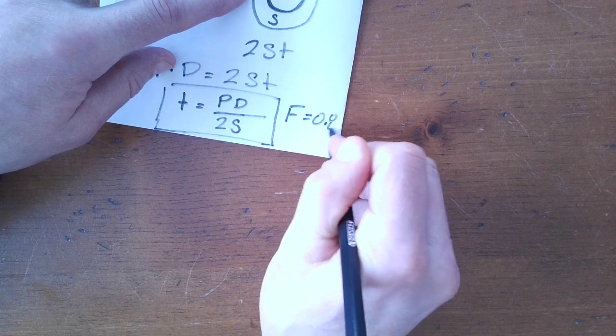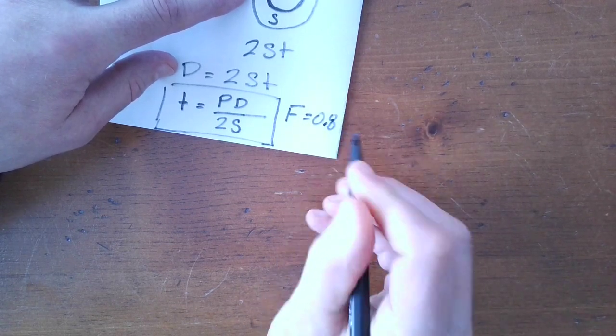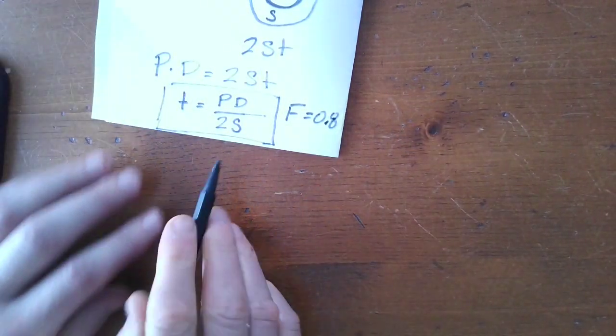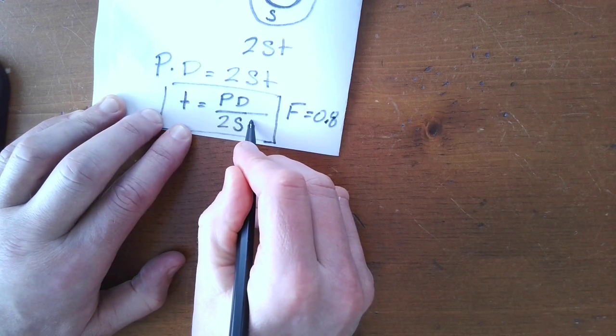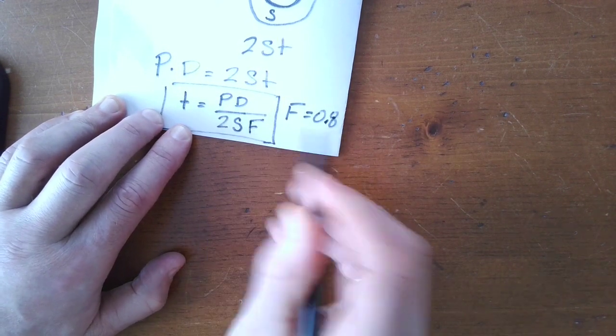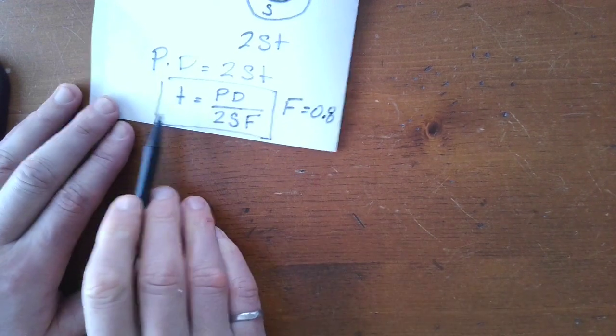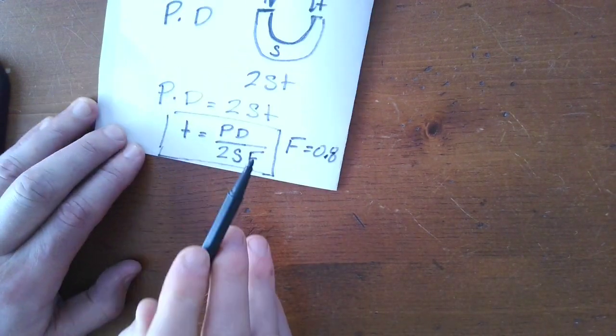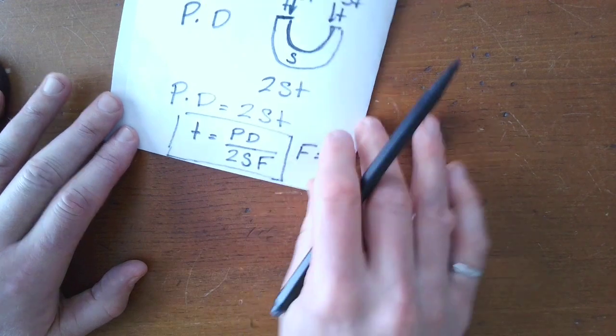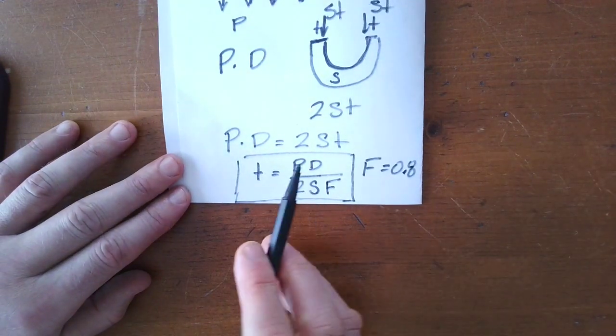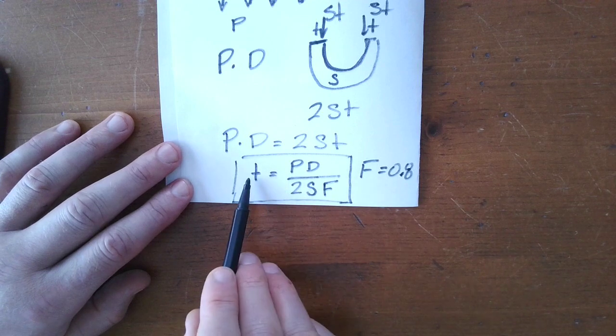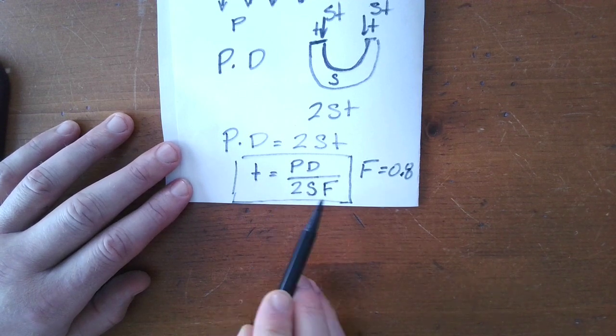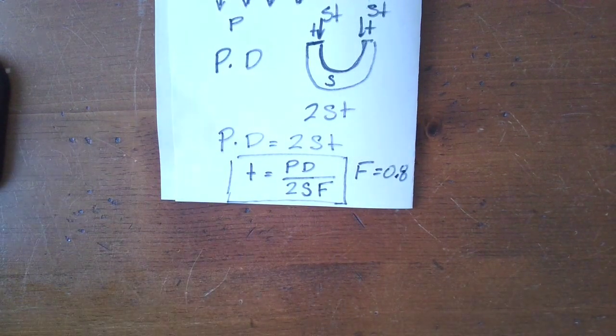So, if we put that factor on the bottom of the equation, that 0.8 will multiply the T by 1.25. So, there we have it. The derivation of the Barlow equation, T equals PD over 2SF. Thanks for watching.